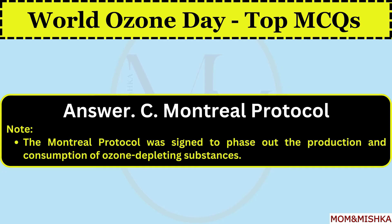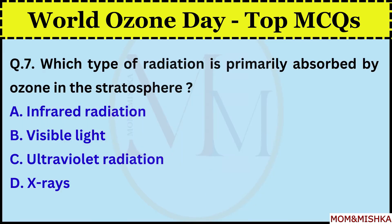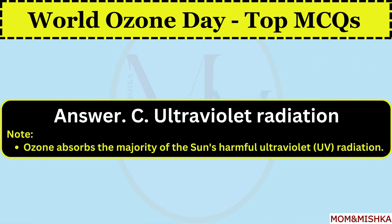Which type of radiation is primarily absorbed by ozone in the stratosphere? Ultraviolet radiation. Option C. Ozone absorbs the majority of the sun's harmful ultraviolet radiation.